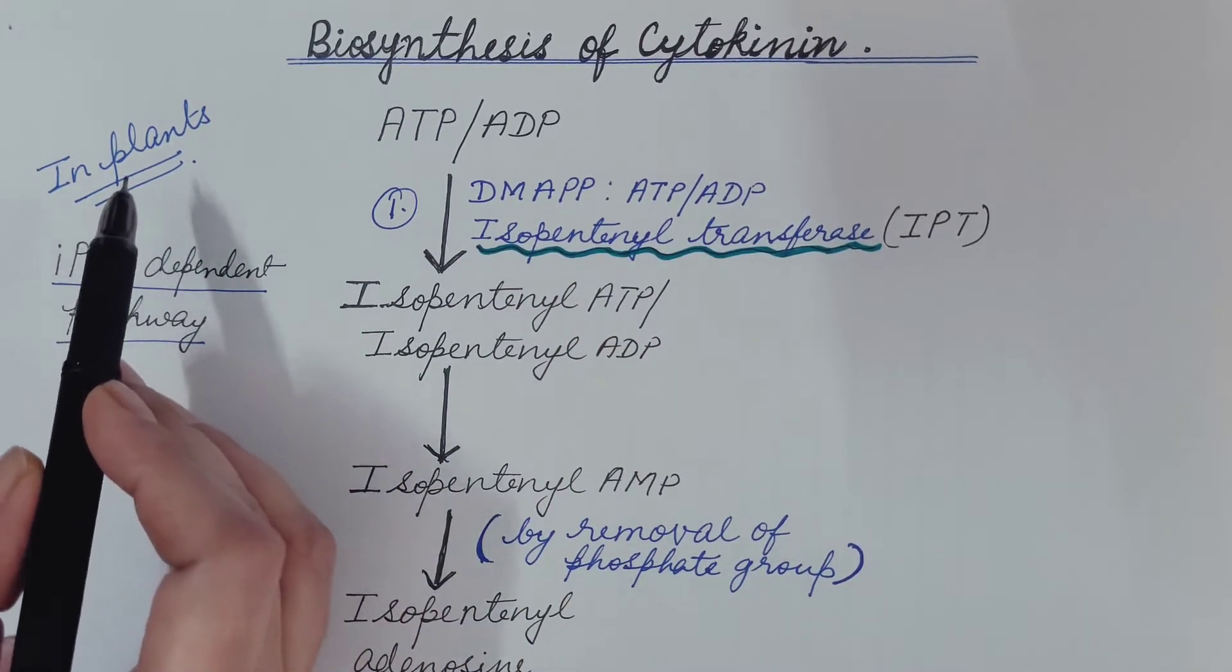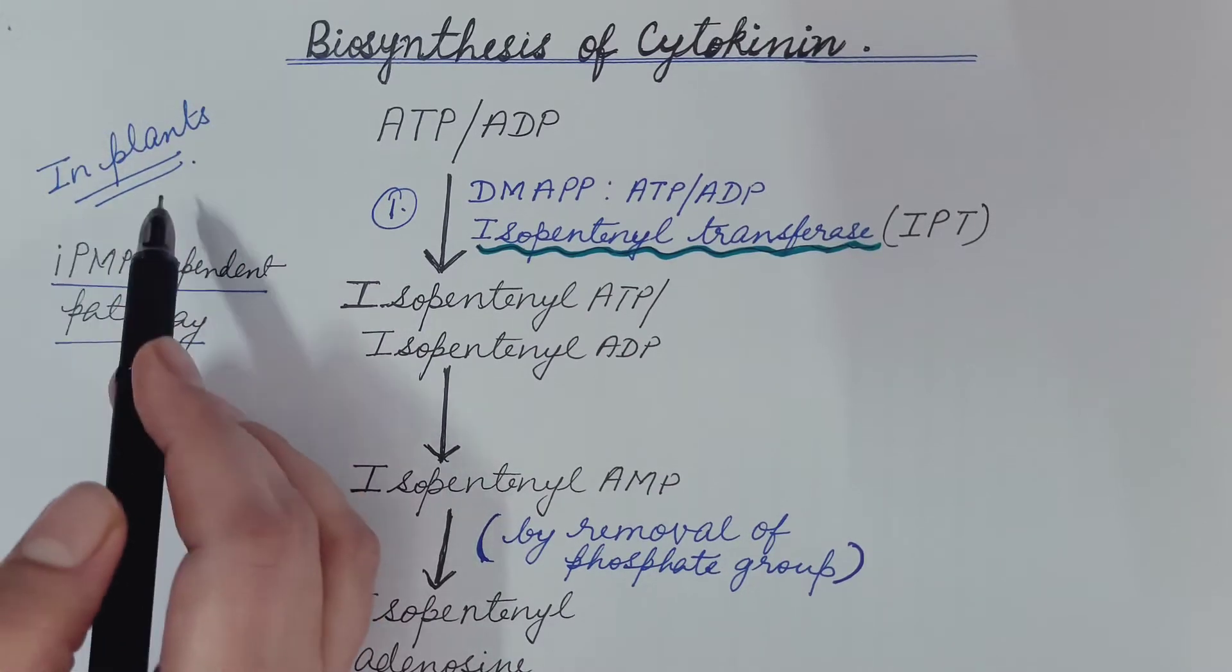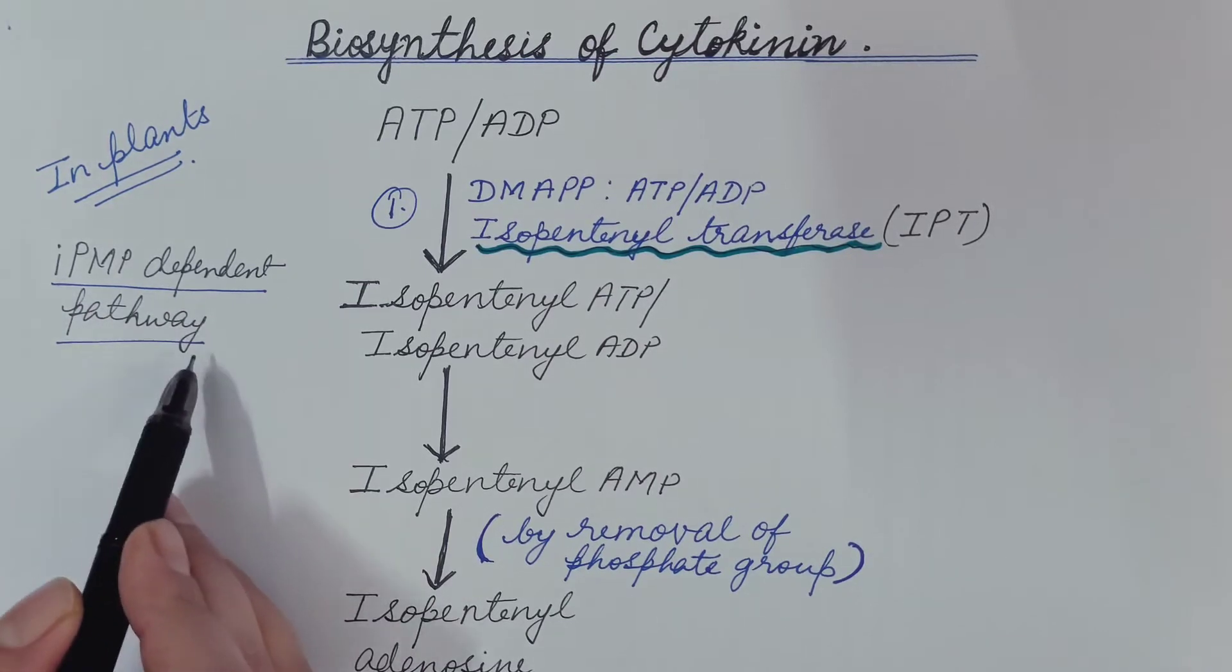In the first pathway, we will discuss about how it is synthesized in plants. This is an important pathway and is known as the IPMP dependent pathway.